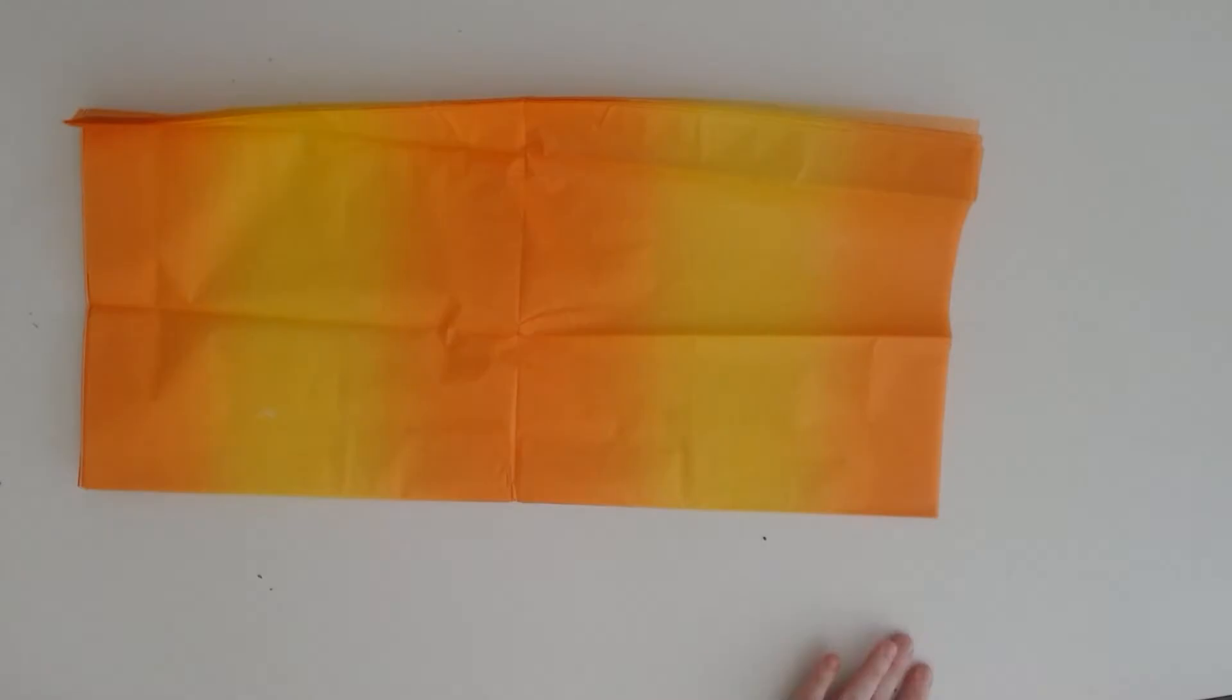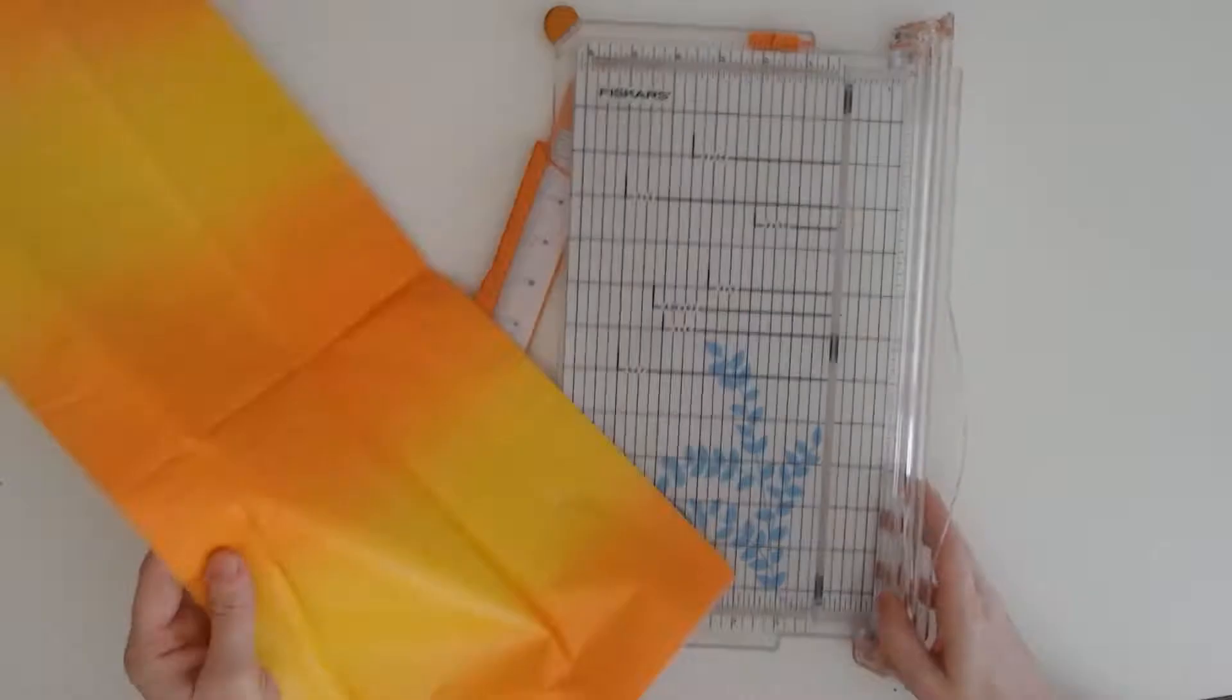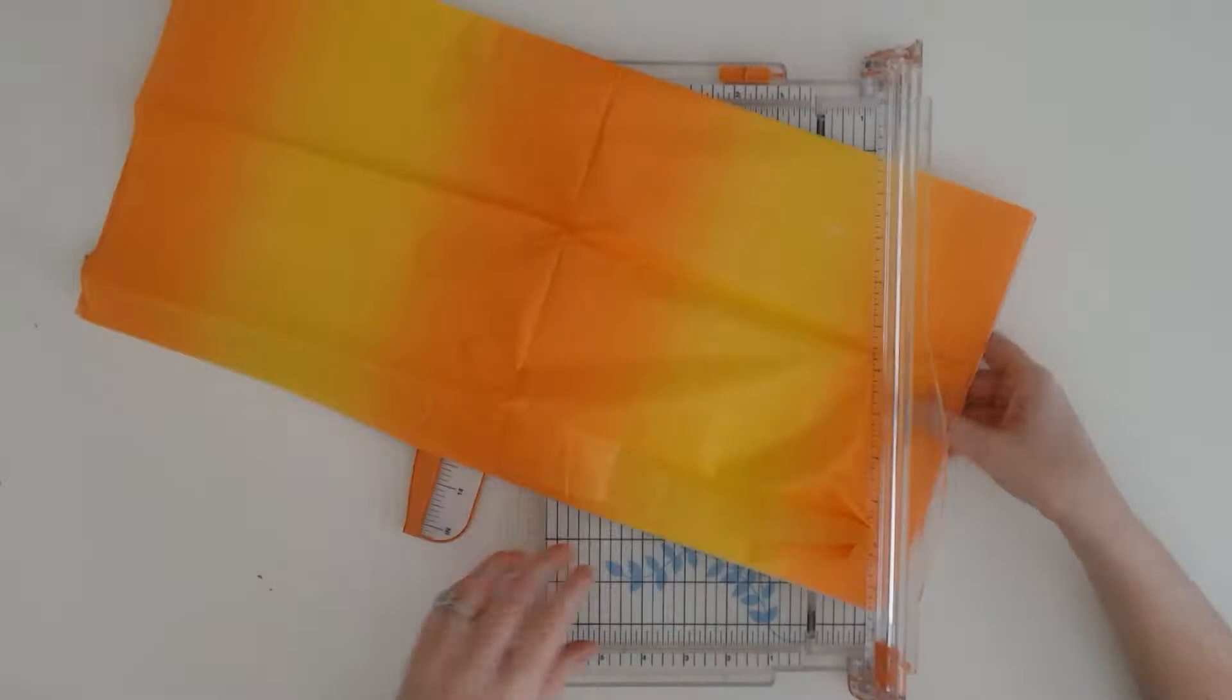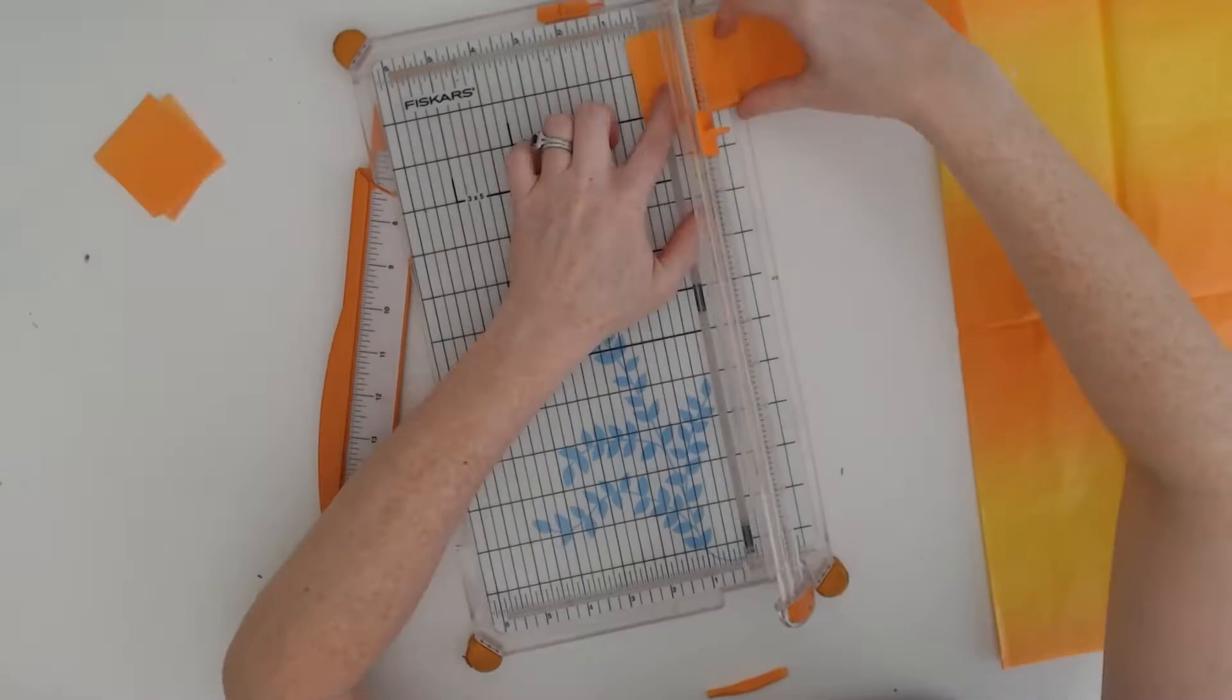Then grab some tissue paper. Look at this cool paper I found at the craft store. It's ombre. I didn't know that they made tissue paper like that and I thought it would be really cool. I actually didn't end up doing an ombre, just using the orange, but wouldn't that be fun for an ombre pumpkin? Cut the tissue paper into small squares. A paper trimmer works perfect for doing this really quickly.